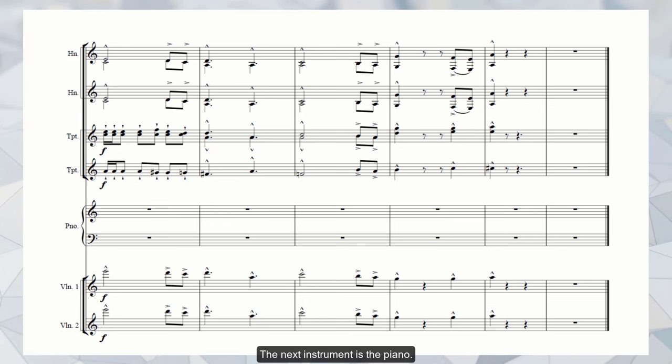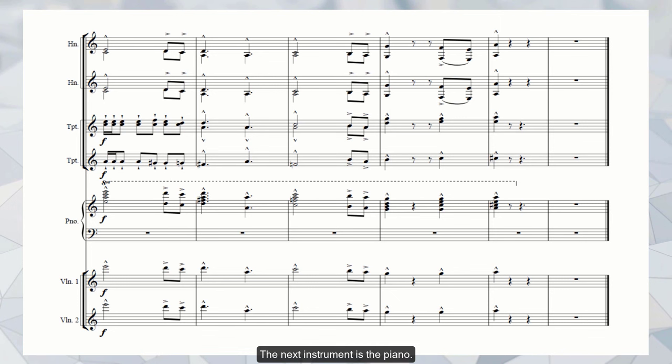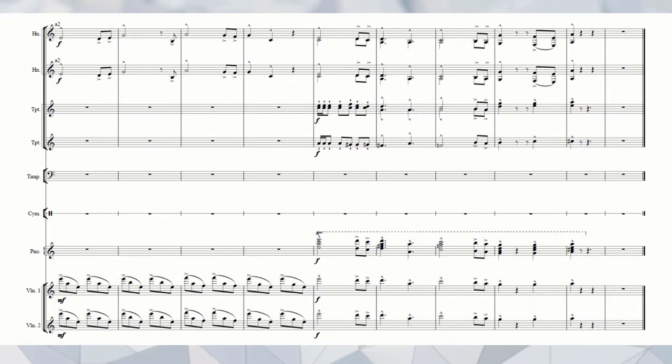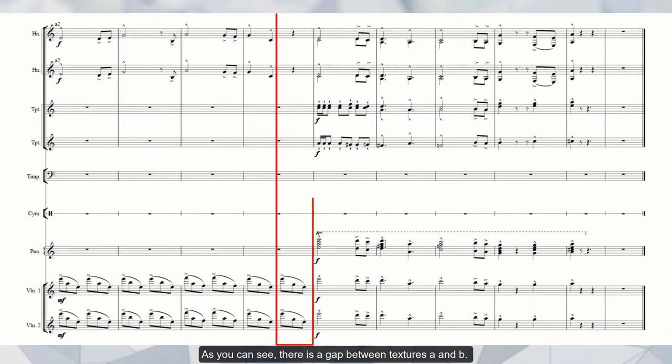The next instrument is the piano. Unlike violins, this instrument is considered a weak instrument so filling its part with chords will not create tension in the register. Let's listen to all of them. As you can see, there is a gap between texture A and B.